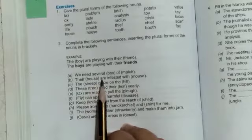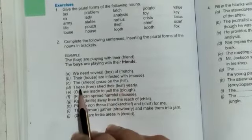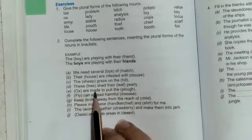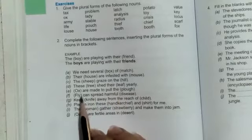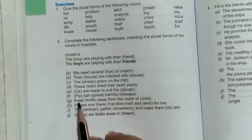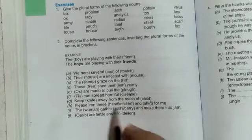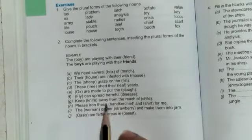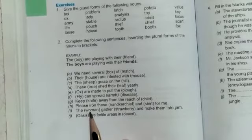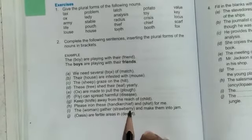Their houses are infested with mice. The sheep graze on the hills. These trees shed their leaves yearly. Oxen are made to pull the ploughs. Flies, F-L-I-E-S, can spread harmful diseases. Keep knives, K-N-I-V-E-S, away from the reach of children. Please iron these handkerchiefs and shirts for me.